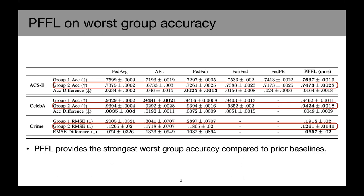As highlighted in this red rectangle, we can see that our PFFL provides the strongest worst group accuracy compared to all the prior baselines. And in some scenarios, such as ACS employment and communities in crime, if you look at the group one accuracy and group one RMSE, we are also having the best group one performance, which is strong group performance compared to other baselines.